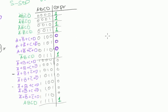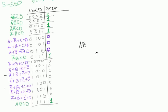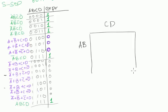We start by creating a usual Karnaugh Map. We have four variables, so we have A and B to the left, C and D on the top, and we have a grid of 4 by 4.